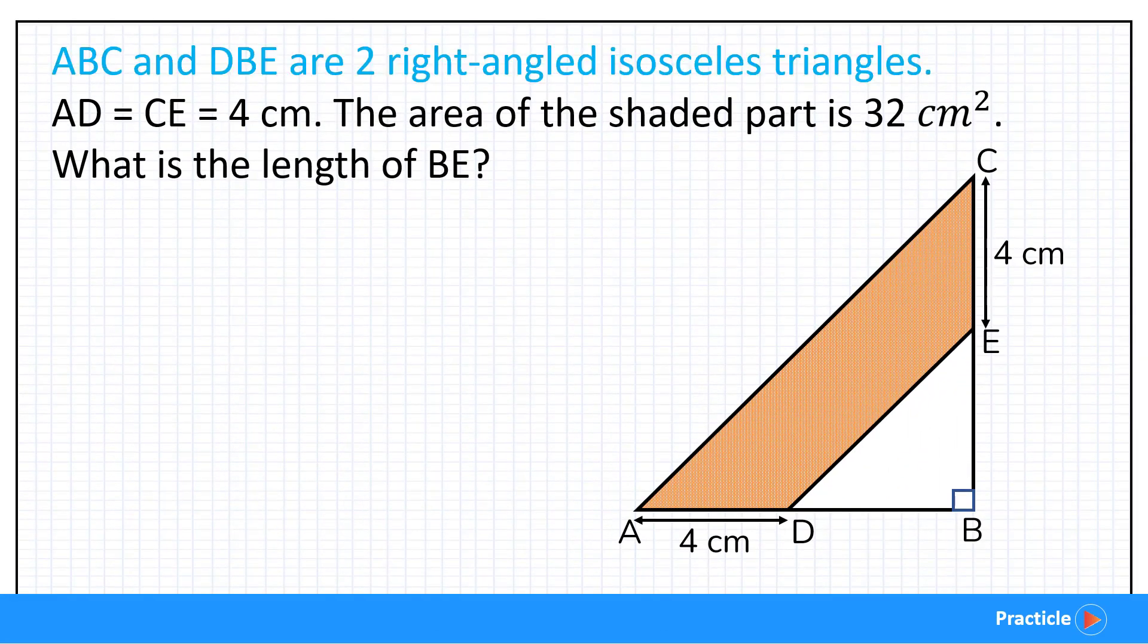Now let's read this problem together. ABC and DBE are two right-angled isosceles triangles. So here we have triangle ABC and then we have triangle DBE. As you can see, both of them are right-angled triangles and this means that it's going to be quite easy to find the base and the height of each of these triangles, correct?